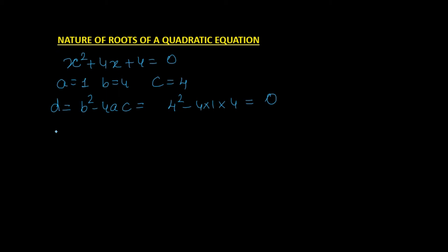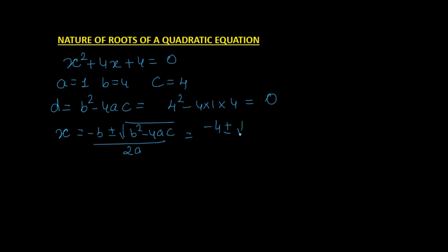Now, how does D = 0 affect the quadratic formula? Substituting: x = (−4 ± √0) / (2·1) = −4/2 = −2.